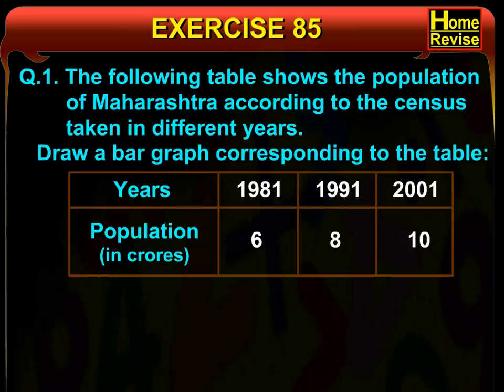In 1981, the population was 6 crores. In 1991, it was 8 crores. And in 2001, it was 10 crores.